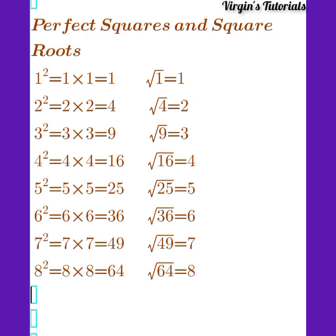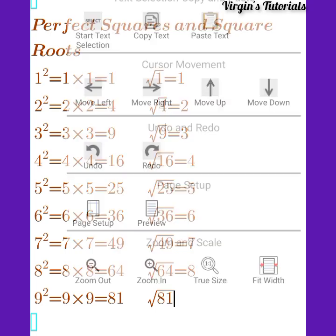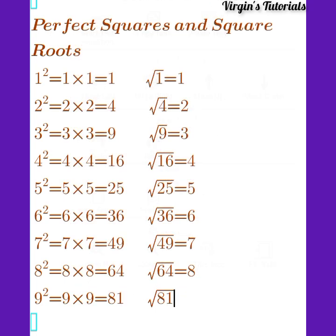And again, we have 9. 9 squared is simply equal to 9 times 9, which is equal to 81. When we have the square root of 81, we simply have 9.